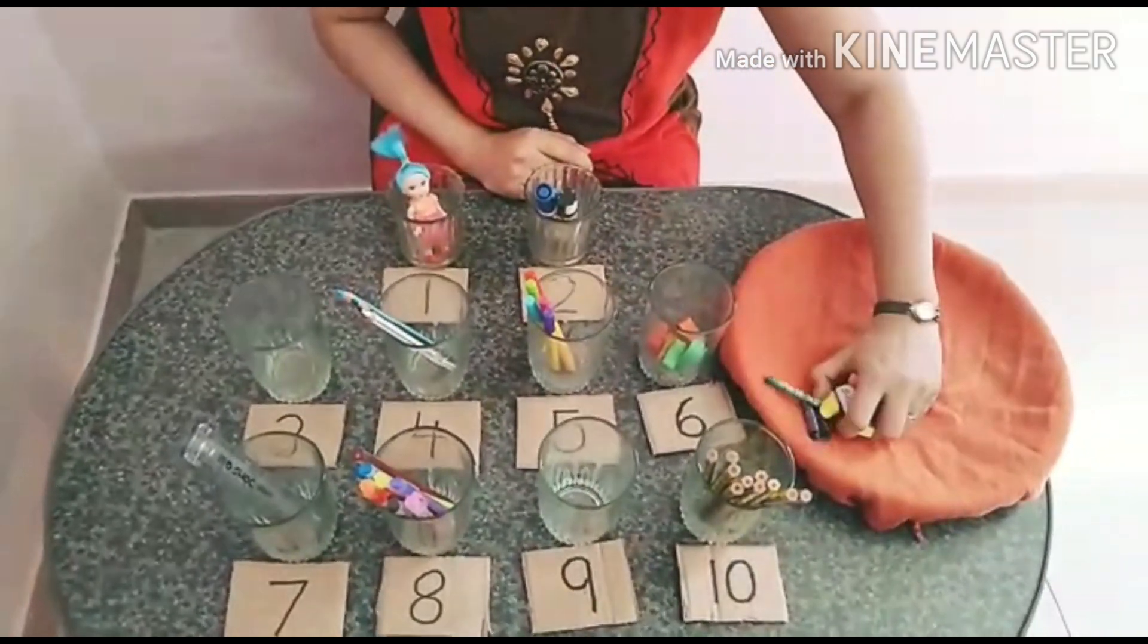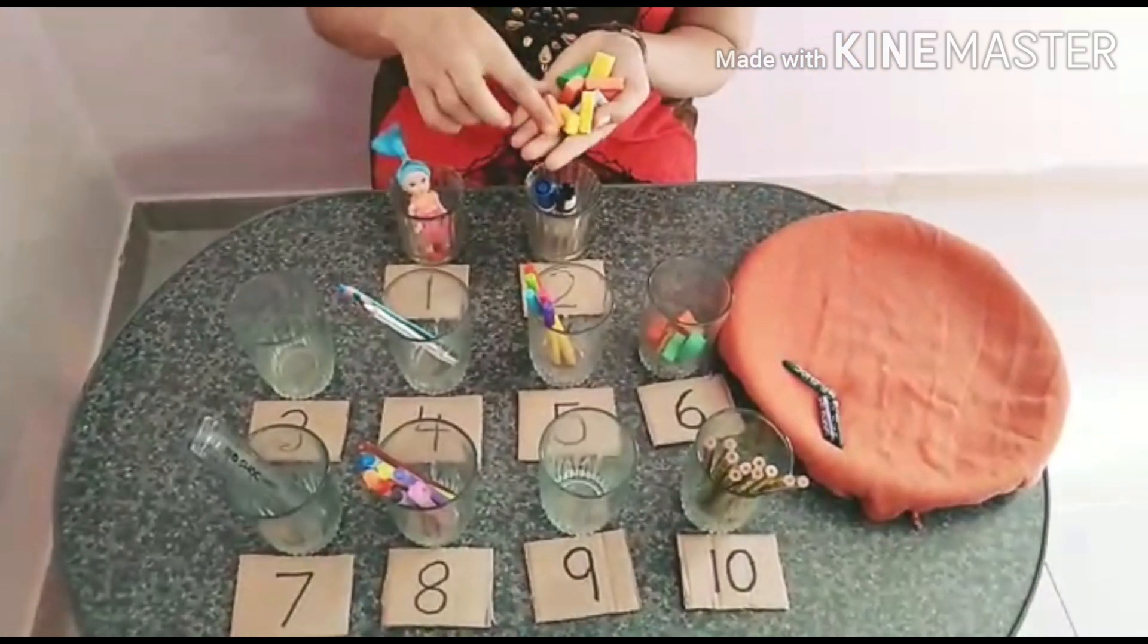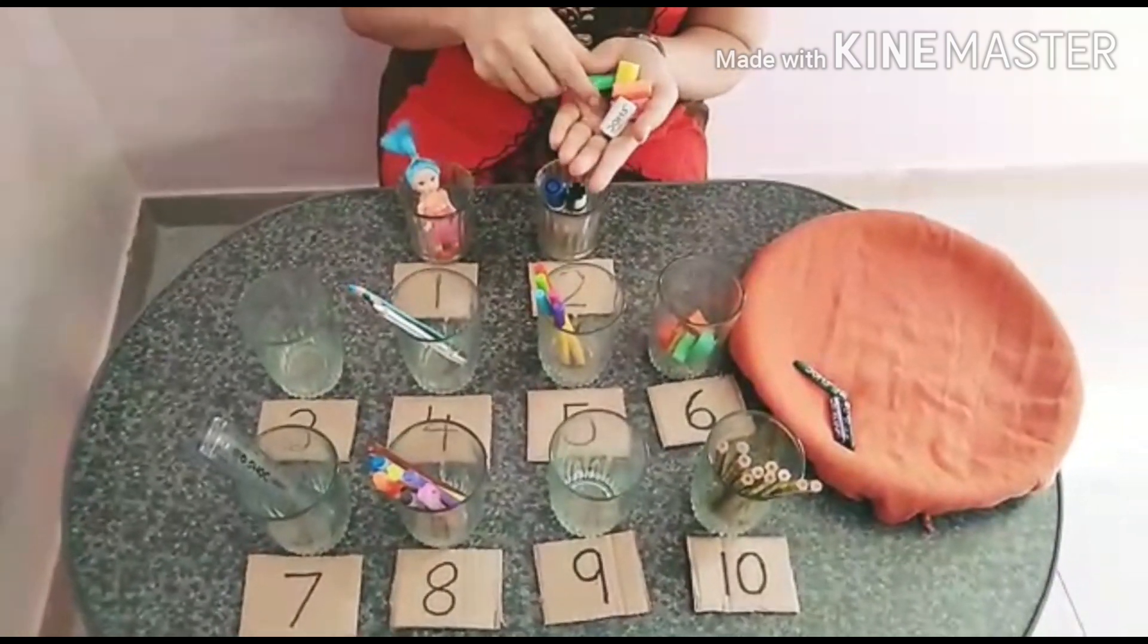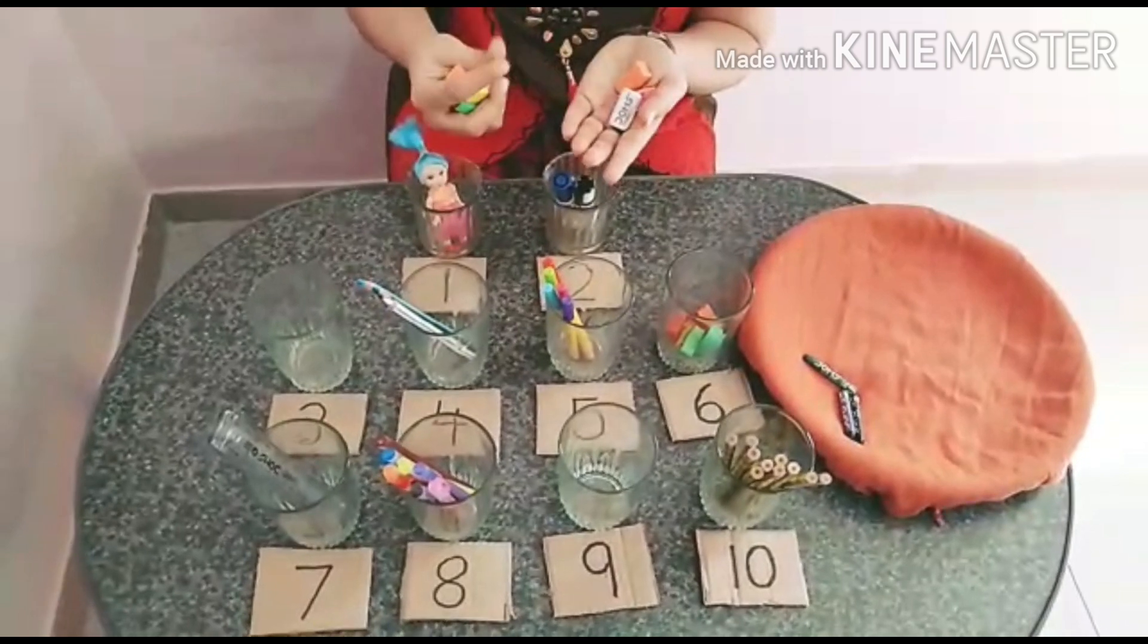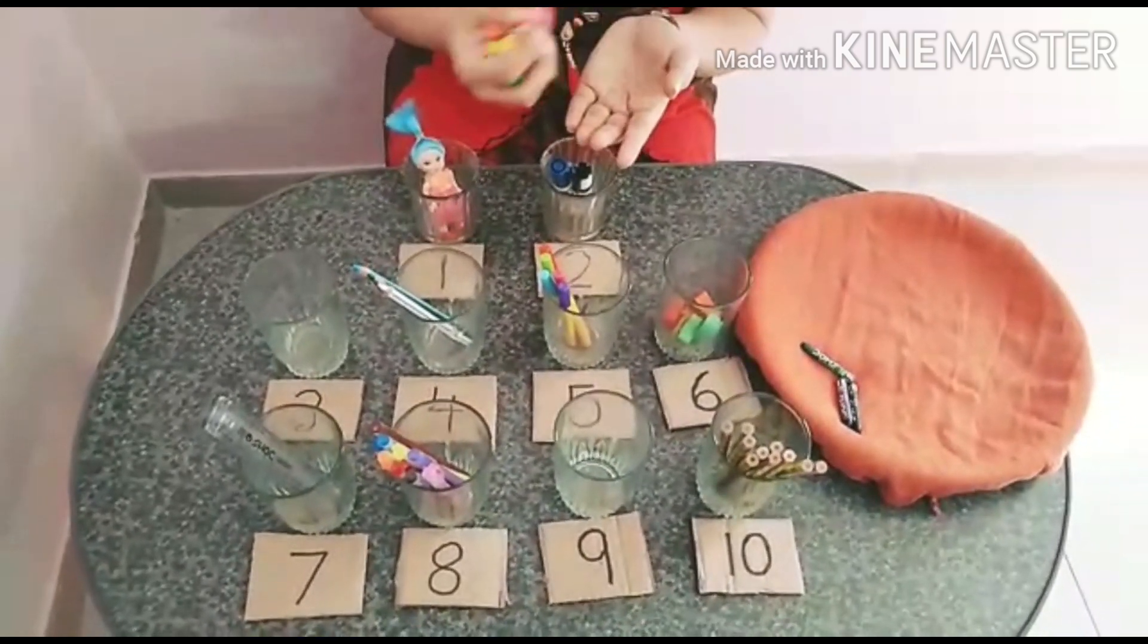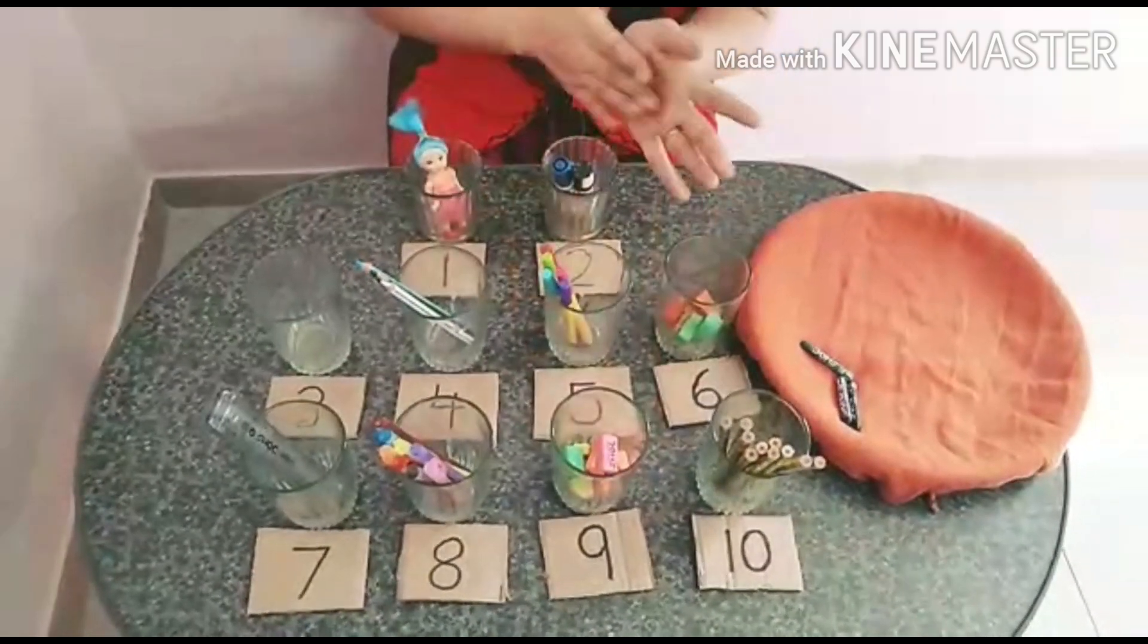Next one is erasers. Let's start counting. One, two, three, four, five, six, seven, eight, and nine. Where is the number nine? Here. Very nice.